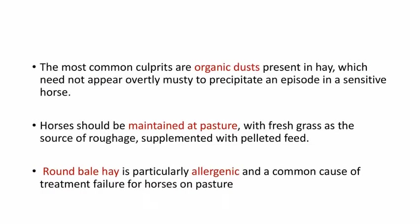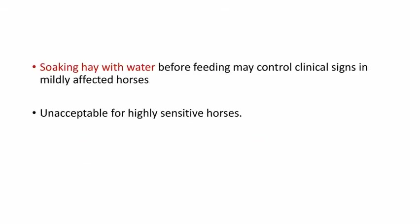The most common culprits are organic dust present in hay, which need not appear overtly musty to precipitate an episode in a sensitive horse. Horses should be maintained at pasture with fresh grass as the source of roughage, supplemented with pelleted feed. Round bale hay is particularly allergenic and is a common cause of treatment failure. Soaking hay with water before feeding may control clinical signs in mildly affected horses but is unacceptable for highly sensitive horses.